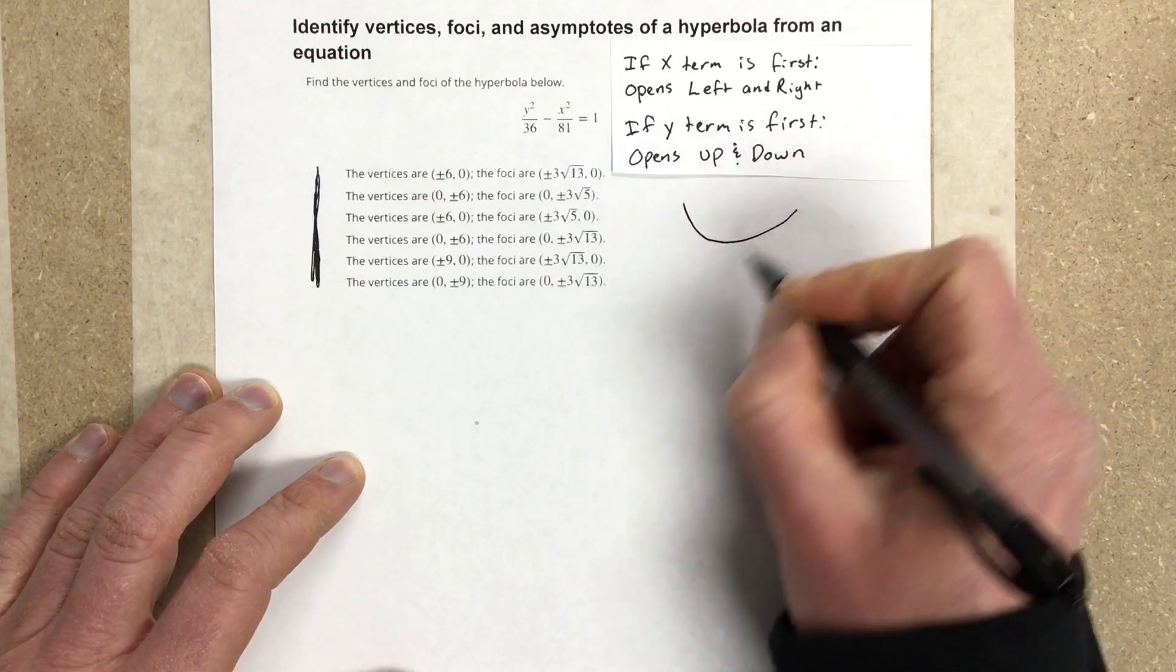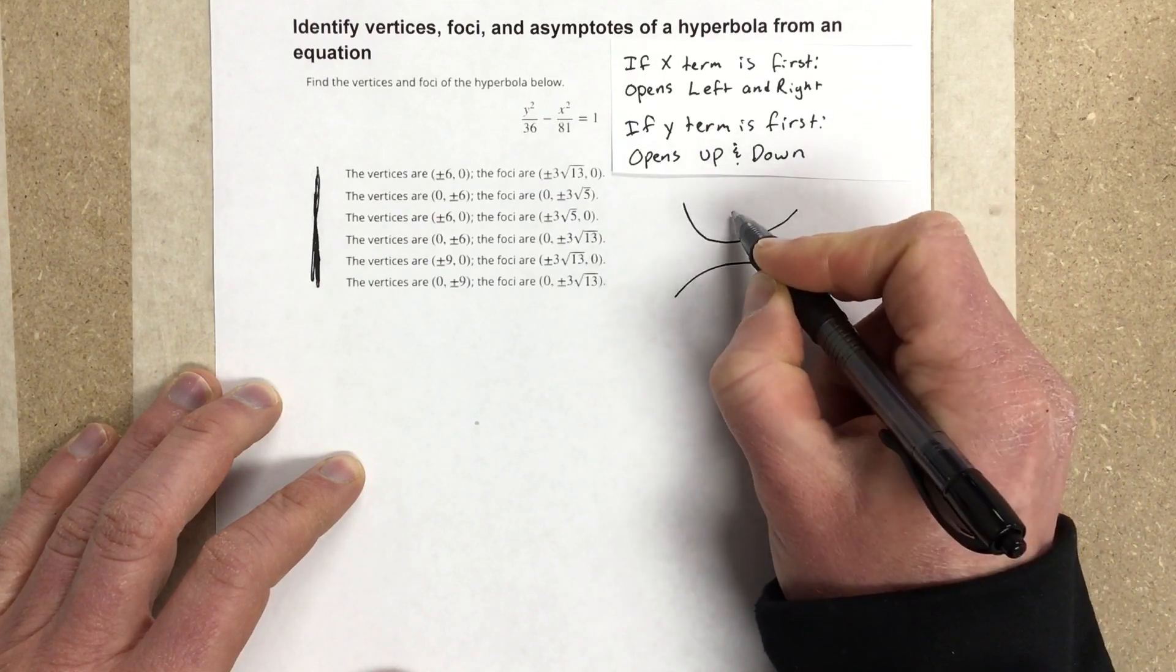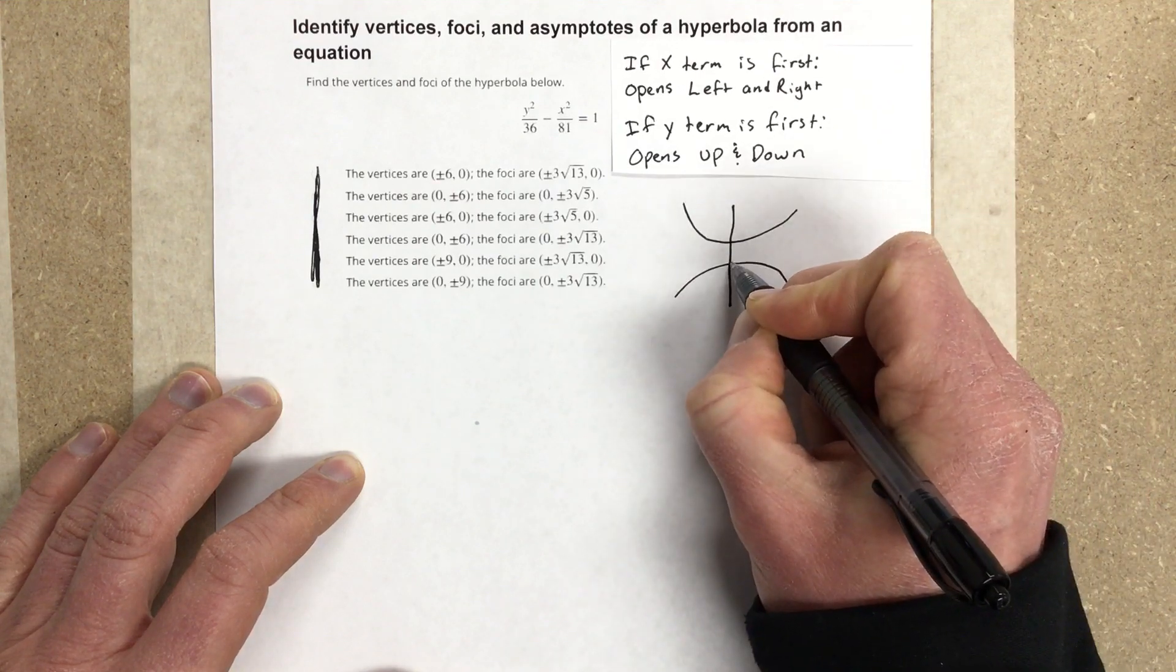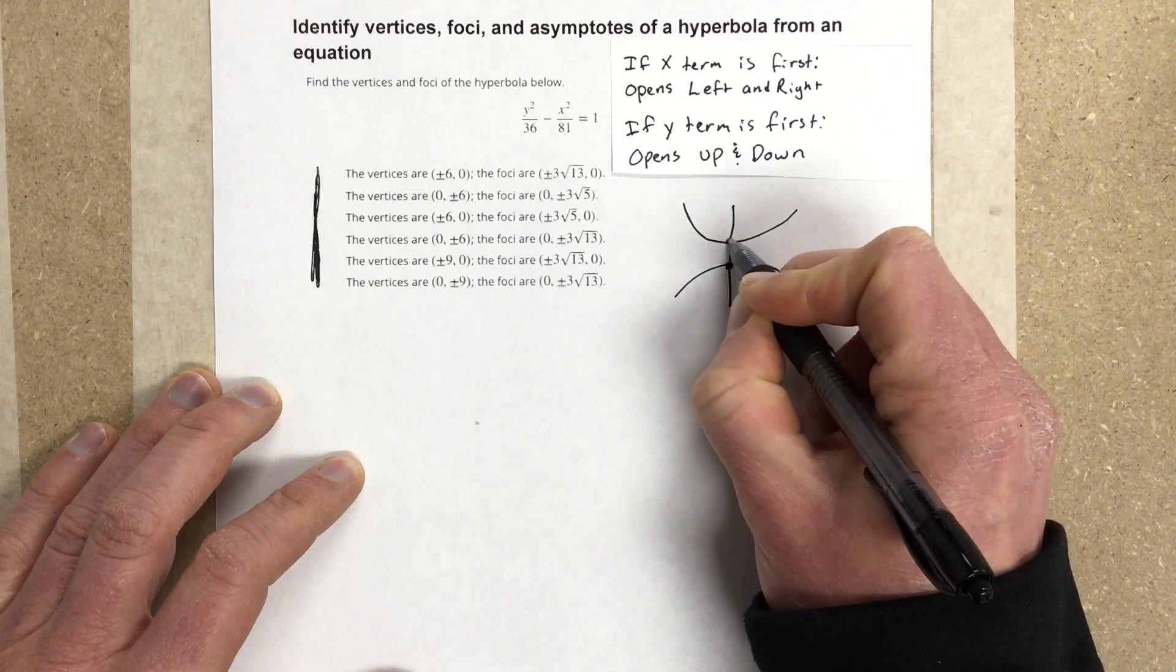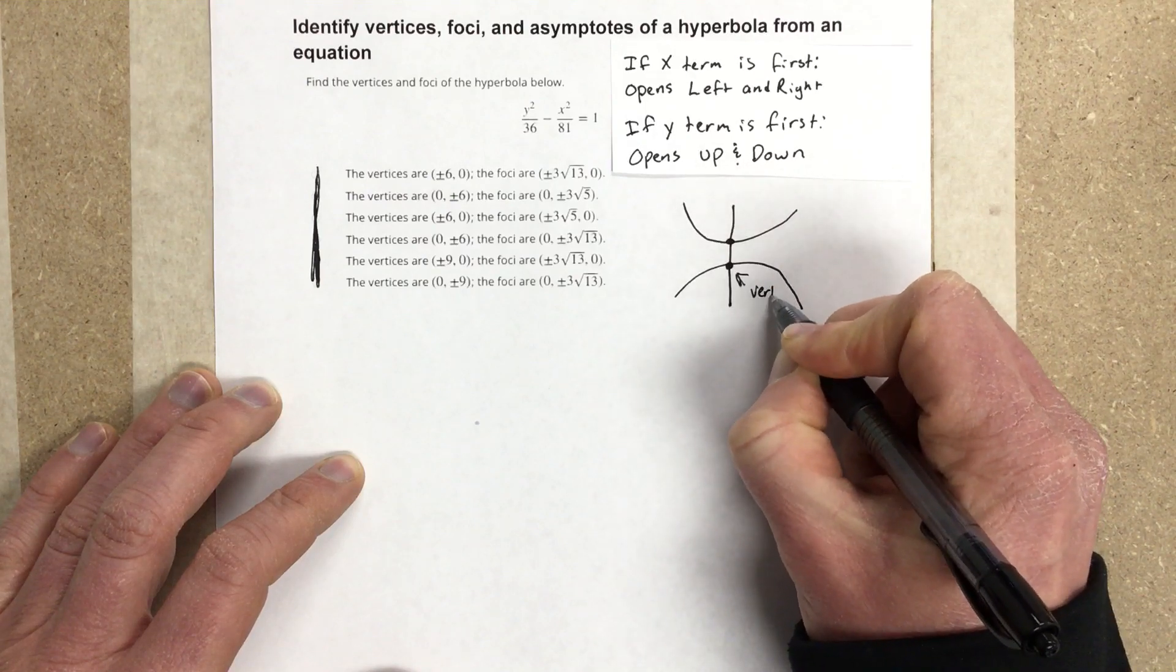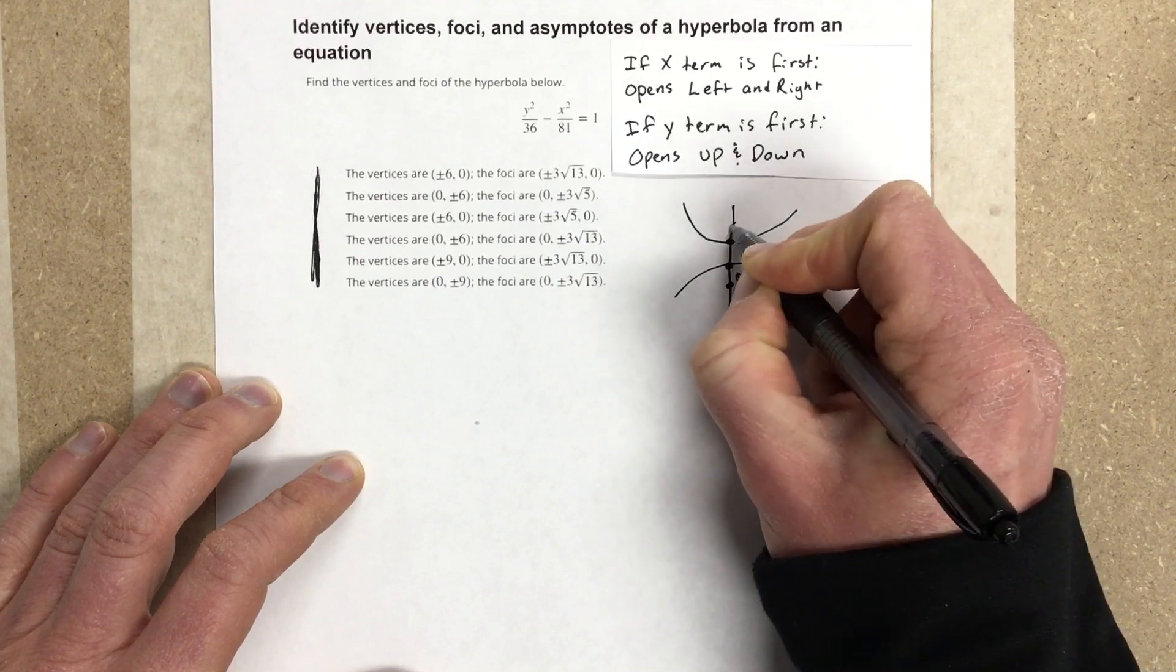We have our hyperbola that looks like this, and so the transverse axis would go right through here, and this would be a vertice, and this would be a vertice, and then this would be a foci, and this would be a foci.